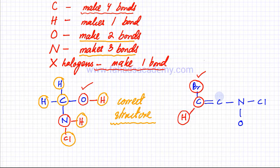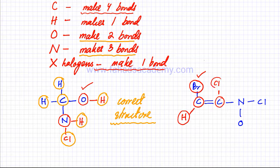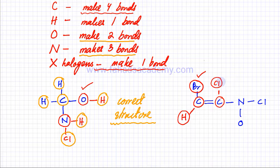Looking at the right carbon: it's making one bond on the right and two bonds on the left — a total of three bonds. Carbon was supposed to make four bonds, so this carbon is drawn incorrectly. Let's bond it with another chlorine atom. Now carbon's bonds are complete: one here, one here, and two on the left — a total of four. Chlorine is a halogen that makes one bond, and it's doing that, so chlorine is correct.